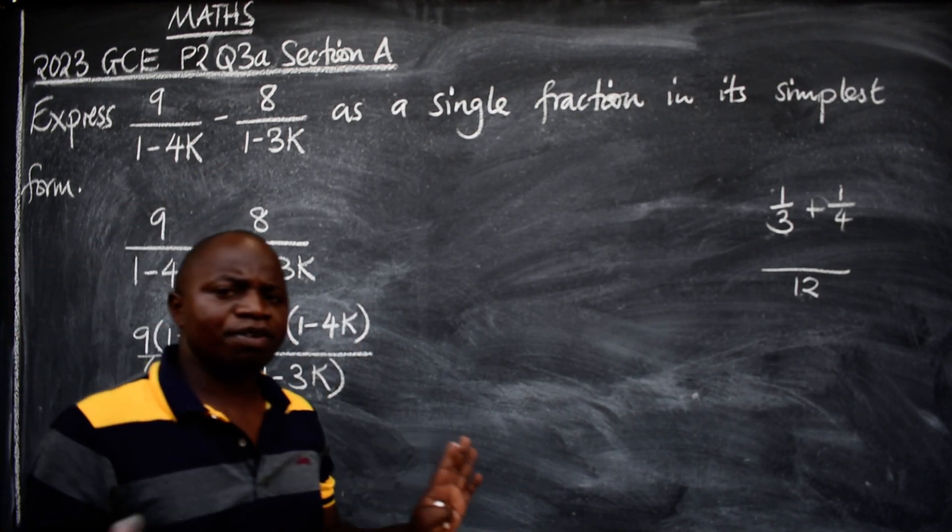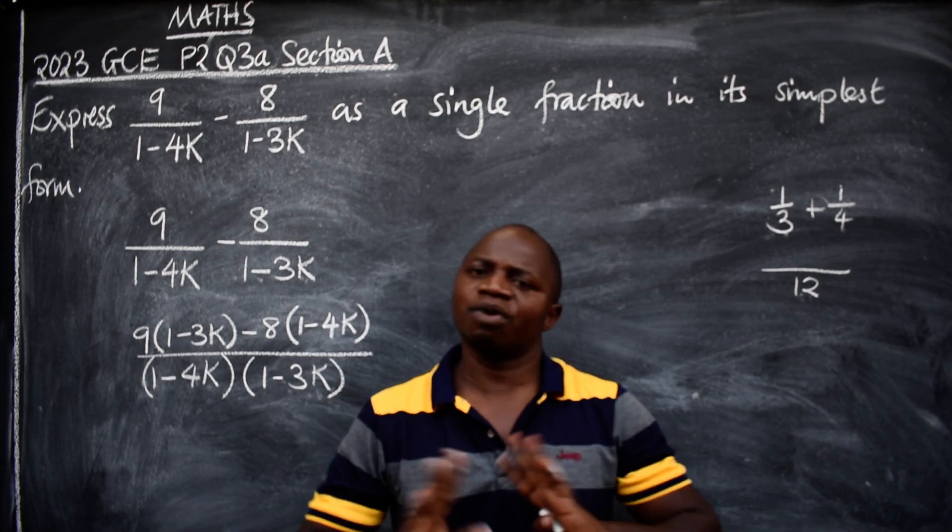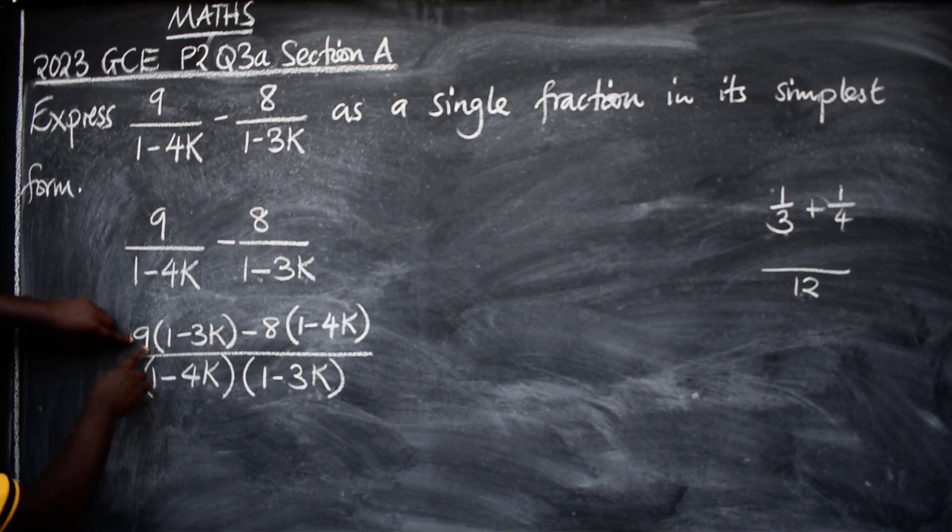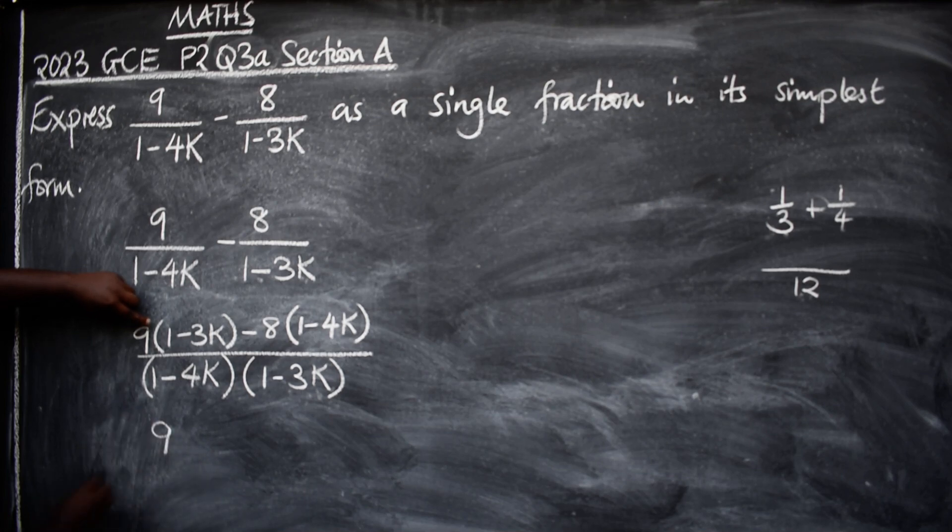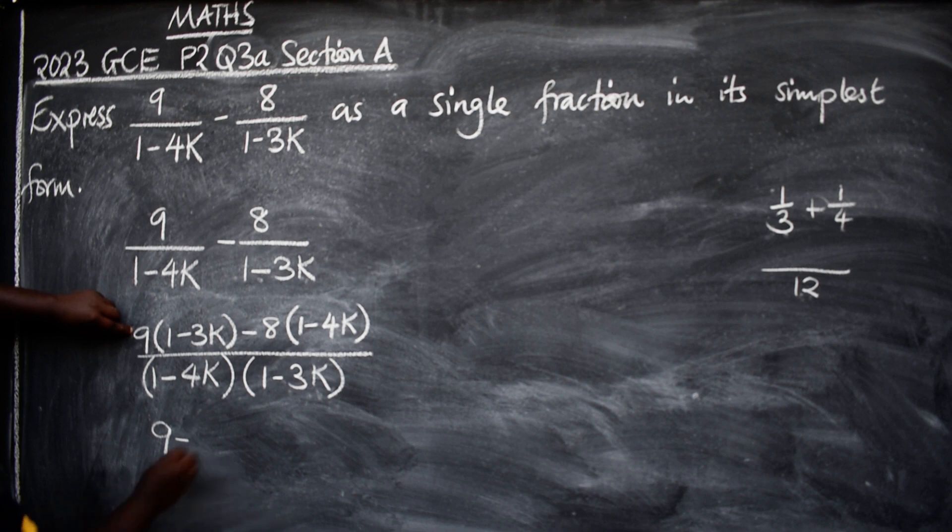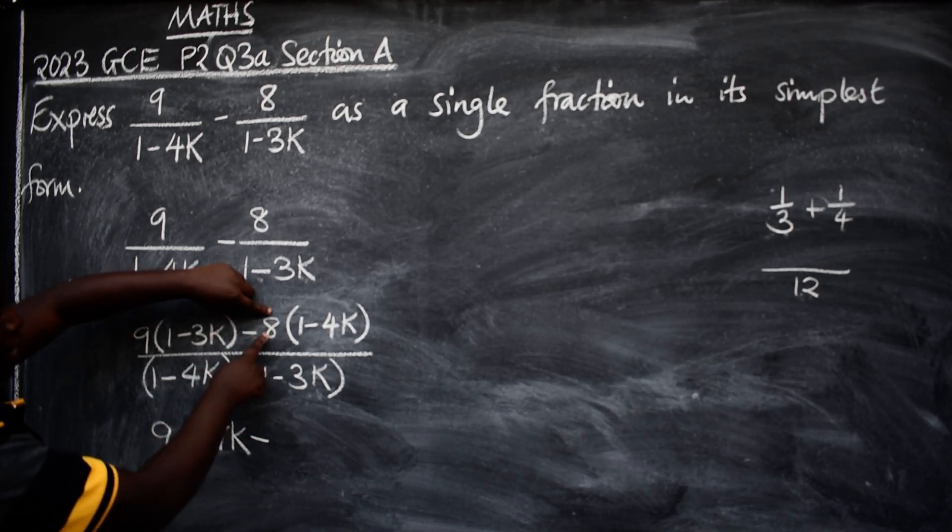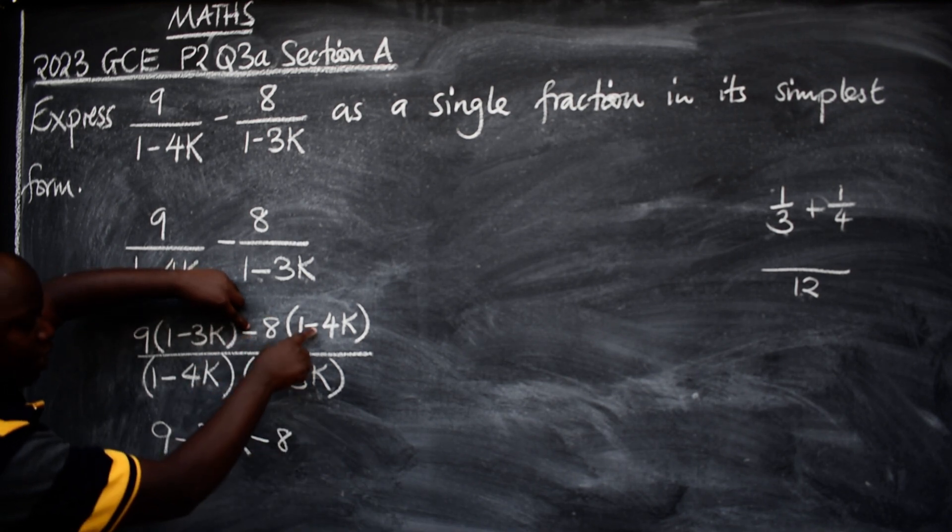Your job is to simplify the numerator, not the denominator. Leave the denominator the way it is. So we have 9 times 1 will give us 9, minus 9 times 3 will give us 27, so we have 27k here.